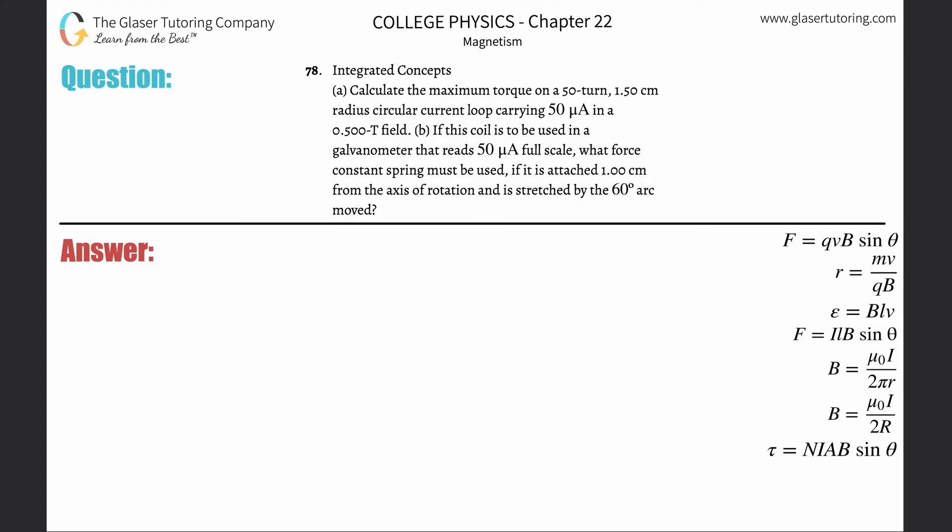Number 78, integrated concepts. Letter A: Calculate the maximum torque on a 50-turn, 1.5 centimeter radius circular current loop carrying 50 microamps in a 0.5 tesla field. We have the formula that torque is equal to the number of turns multiplied by the current multiplied by the cross-sectional area of the coil multiplied by the magnetic field that passes through the coil multiplied by the sine of the angle. The torque is maximum when this term is equal to 1.